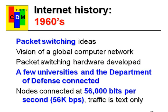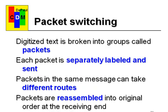Dividing 56,000 bits per second by eight bits per character gives you about 7,000 characters a second — not really very fast by today's data standards. The way packet switching works is that instead of having a continuous connection, the text being sent — initially just ASCII text — is broken up into groups, and each group could follow a separate path through the network. Each packet is separately labeled and sent, and they could follow different routes. They're reassembled at the receiving end.